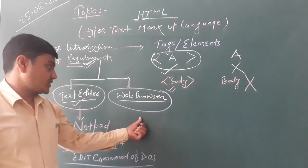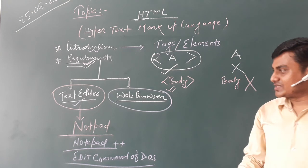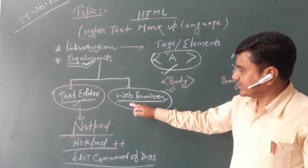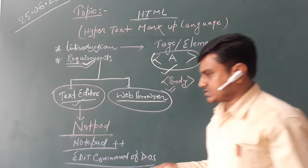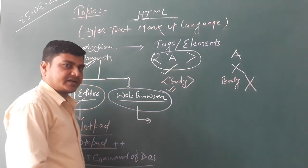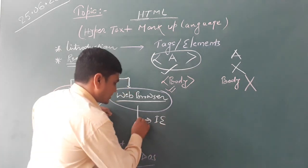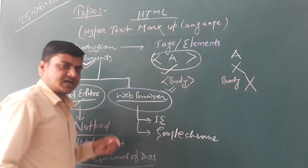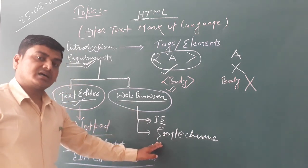A web browser is a special kind of program that interacts with web pages. All the pages displayed over the internet are displayed with the help of a web browser. Examples of web browsers include Google Chrome, Mozilla Firefox, Chromium, Internet Explorer, and Safari. These are the widely used web browsers used to display web pages.